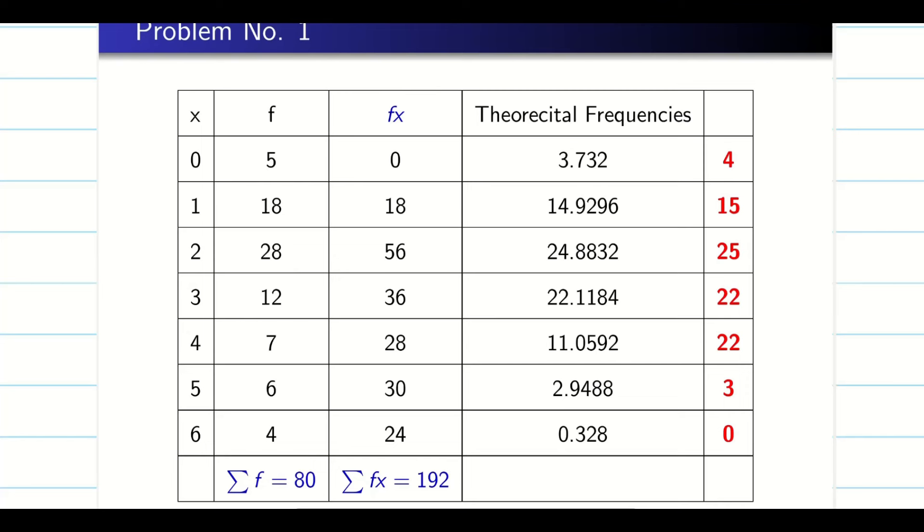At the end of the problem, what you do? It's better to make a three row table. Write your x, write your frequency and write your expected frequency and present in a legible way. That's it guys. Fitting a binomial gets over.